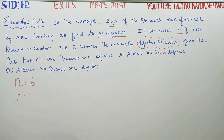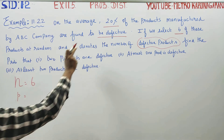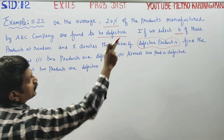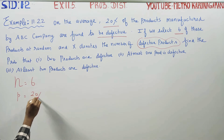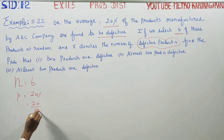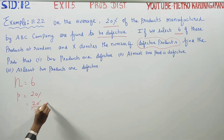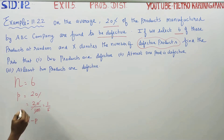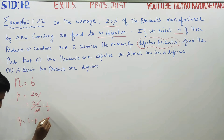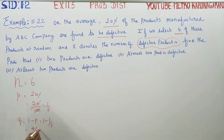P — defective products. How many defective products are there? 20% defective products are there, that is 20 by 100. If you cancel this, this is 1 by 5. What is Q? Q is equal to 1 minus P. You get 1 minus 1 by 5. Your answer is 4 by 5. N ready, P ready, Q ready.